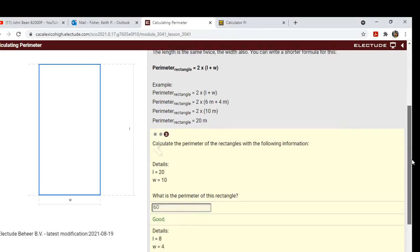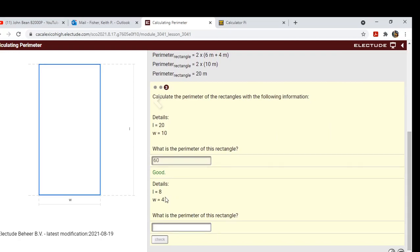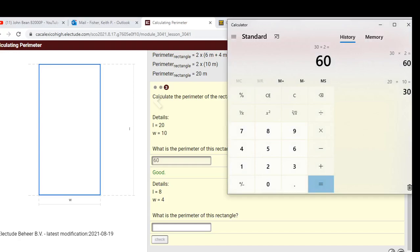All right, so it's going to ask you to keep doing this. I think it's three times they ask you to do this. Eight times four, so it's clear there: eight plus four times two equals twenty-four.